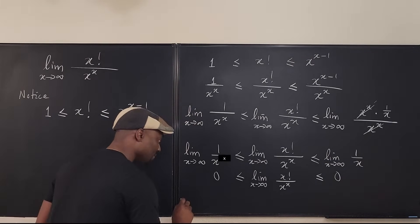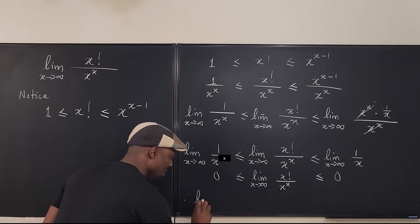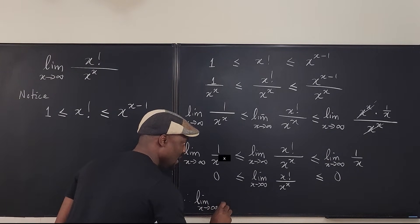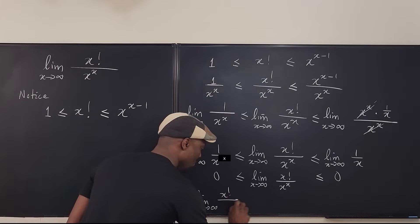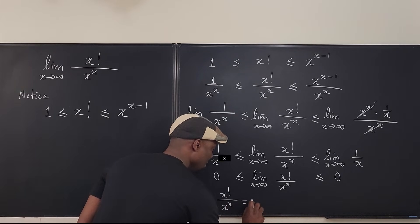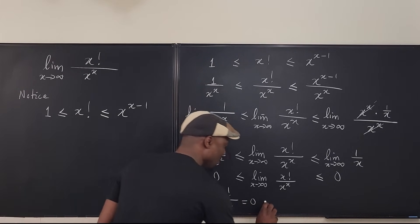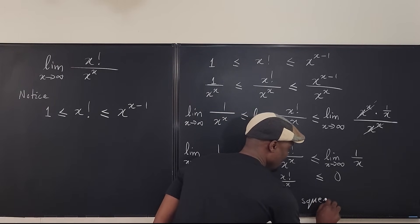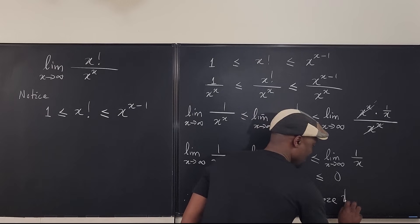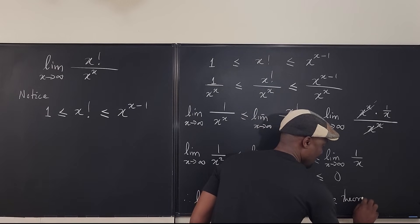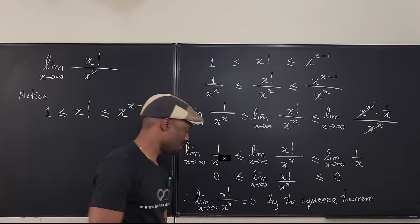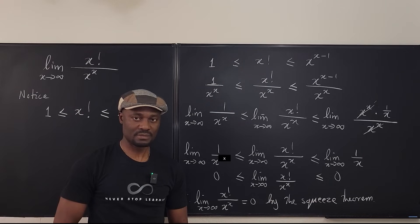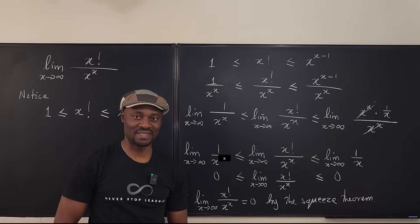Therefore, the limit as x goes to infinity of x factorial over x to the x is equal to 0, by the squeeze theorem. Never stop learning — those who stop learning, stop living. Bye-bye.